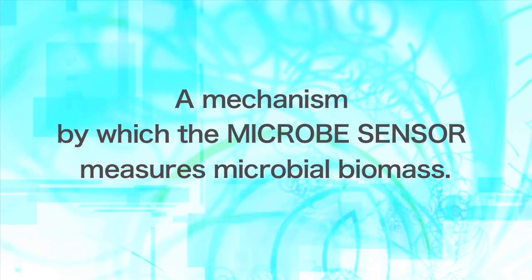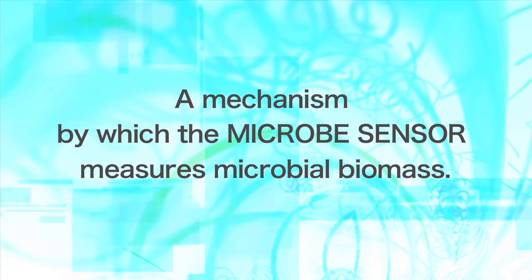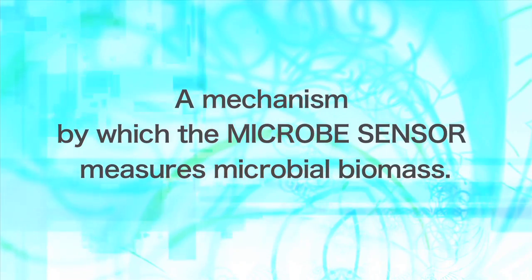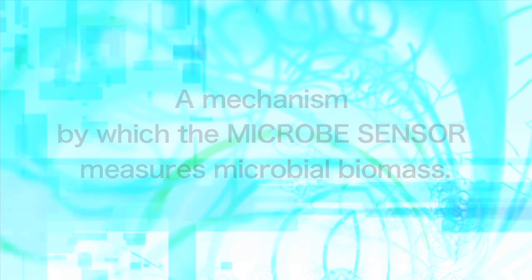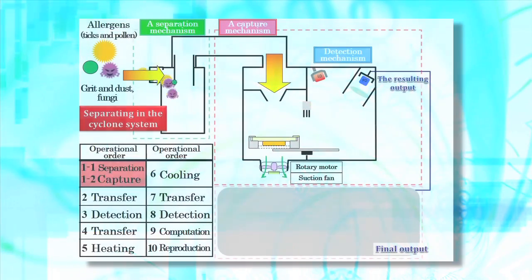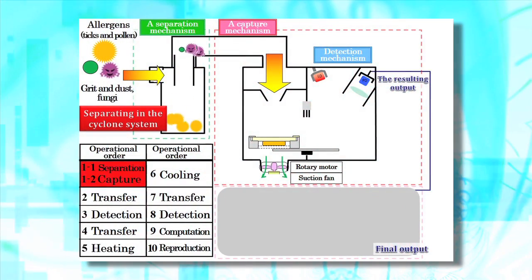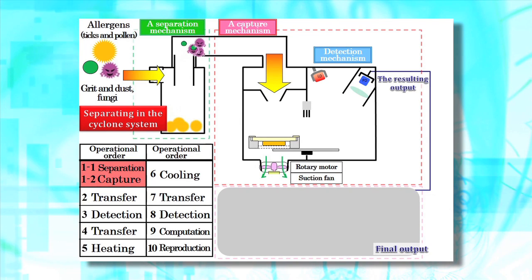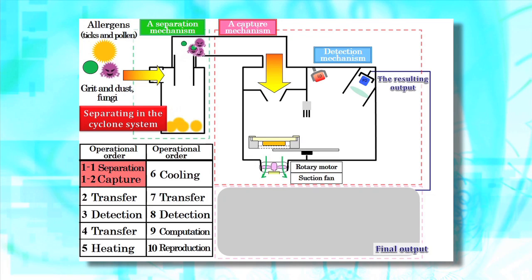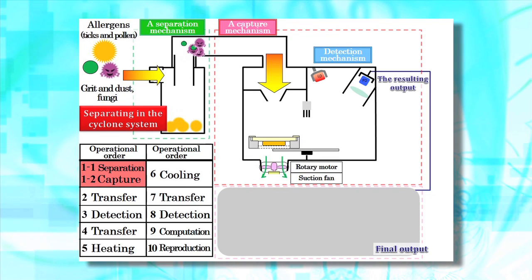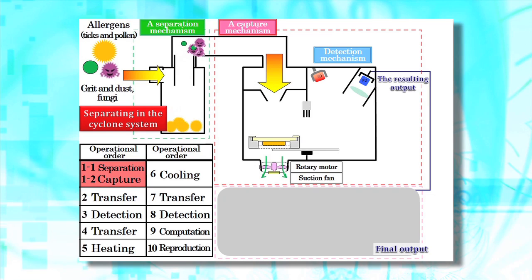Next, I'll explain the automatic measuring flow of the microbe sensor. First, circumambient air is drawn from the inlet port on the side of the body, and particles less than 10 microns, including microbes, are separated by cyclone technology.